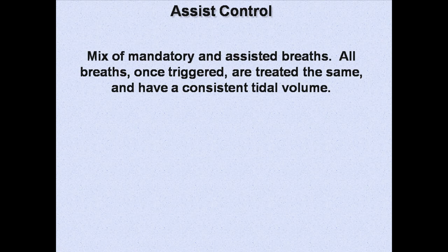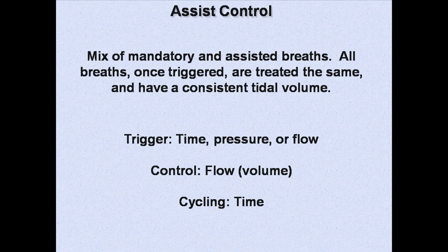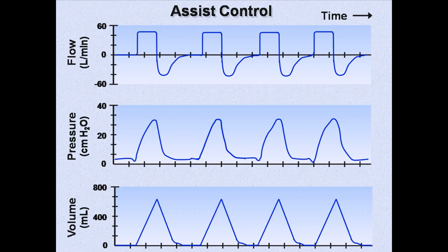The first mode I will discuss is assist control. This mode has a mix of mandatory and fully supported assisted breaths. All breaths, once triggered, are treated the same and have a consistent tidal volume. The trigger for assist control may be either time, pressure, or flow. The control variable is technically flow, though many people will refer to this as volume control, and the cycling variable is typically time. In assist control, the ventilator senses an inspiratory effort by the patient and responds to each by delivering a preset tidal volume. The patient is able to vary respiratory rate, but a backup rate is set to prevent hypoventilation.